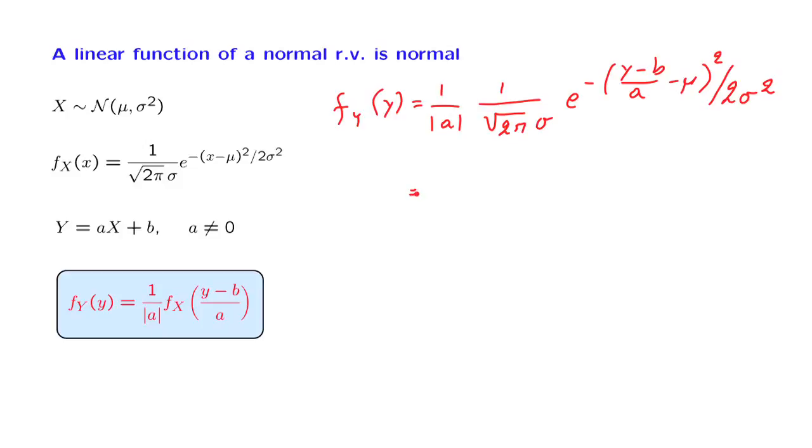And now we collect these constant terms here. And then, in the exponent, we multiply by a squared, the numerator, and the denominator, which gives us this form here.